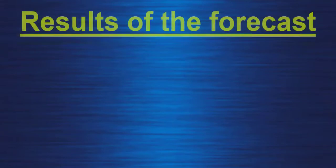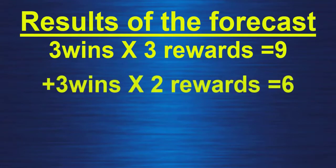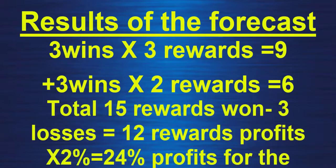That's it for the profile of the forecast from last Sunday. To count it: we have 3 winning trades with 3 rewards, which makes 9 rewards, plus 3 winning trades with 2 rewards, which makes 6 more rewards. So we have 15 reward profits. And we have 3 risk losses, which makes a total of 12 reward profit, times 2% — that's 24% profit for the week using my forecast from last Sunday.